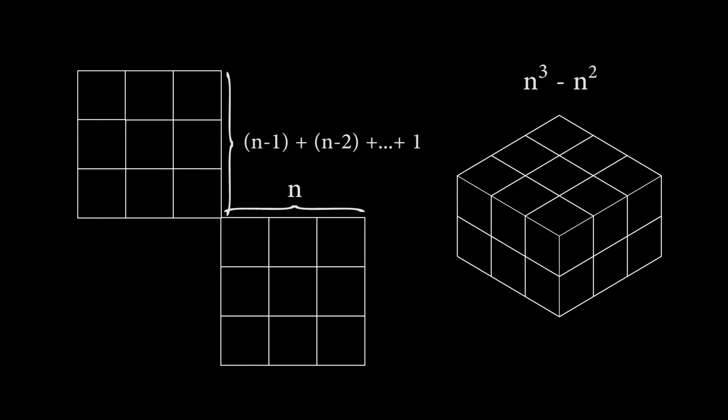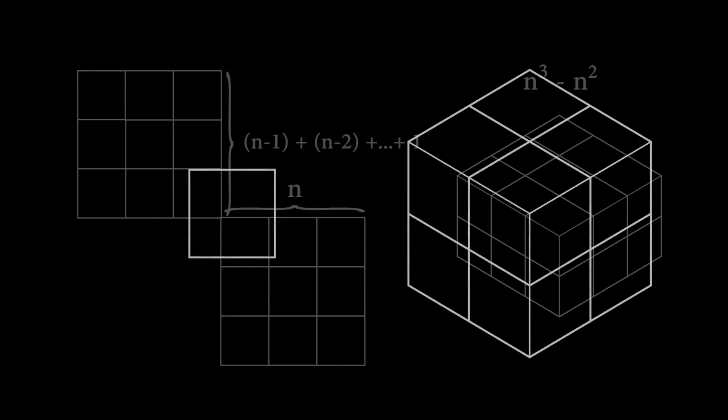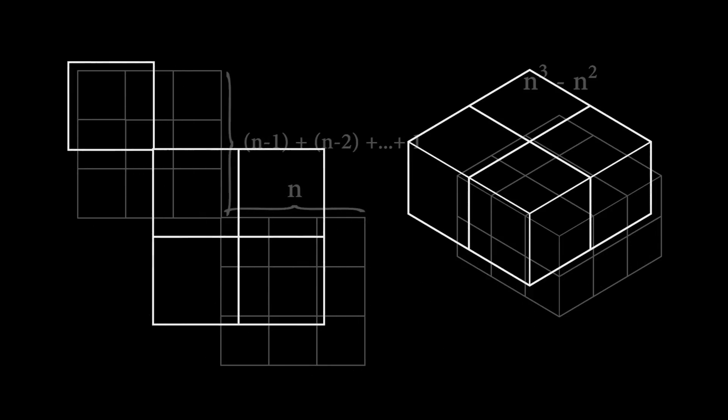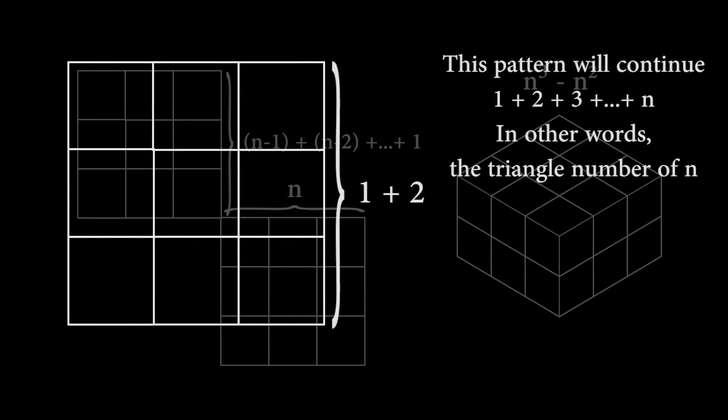The other side length is the sum of the side lengths of all the previous cubes we've added. In other words, it's the triangle number of n minus 1. We can be sure of this since we always construct the next perfect square by placing one layer of the cube diagonally, ensuring that each side length of the square increases by the side length of the cube.